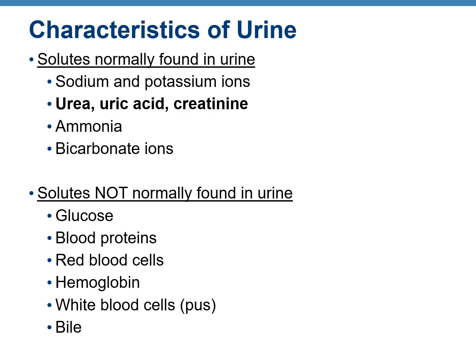What are some normal and abnormal constituents of urine? The solutes normally found in urine include the nitrogenous waste products urea, uric acid, and creatinine. In addition, there may be sodium and potassium ions, ammonia (which gives the smell), and bicarbonate ions.